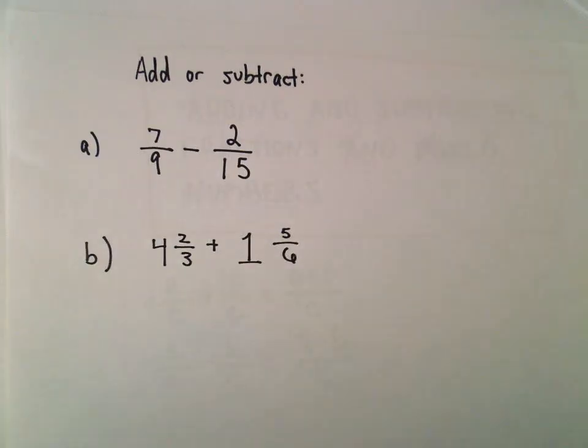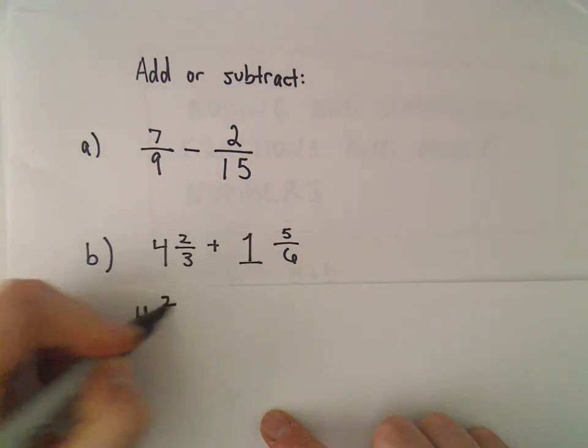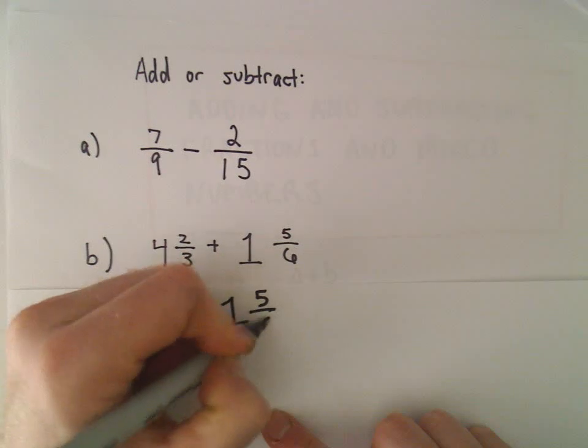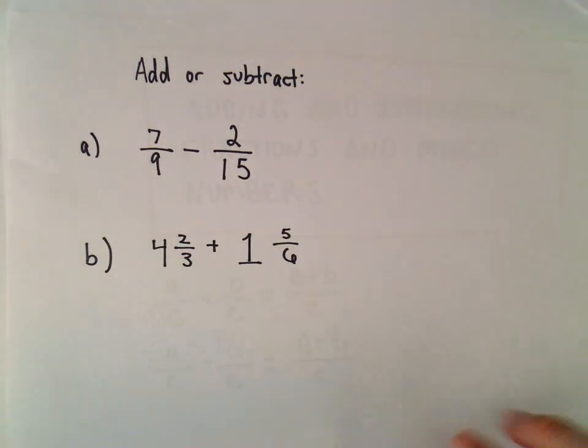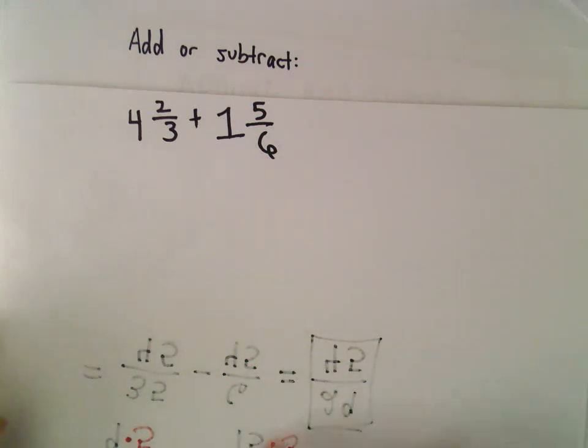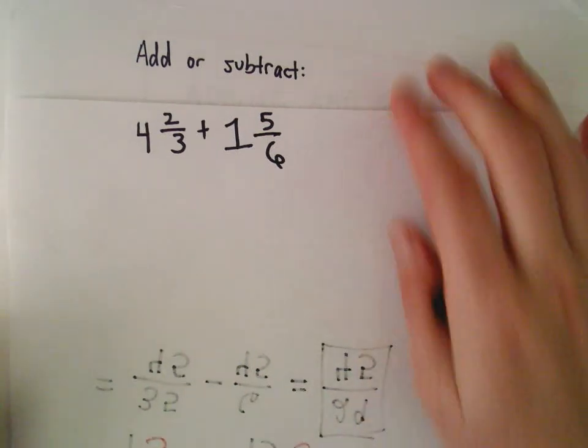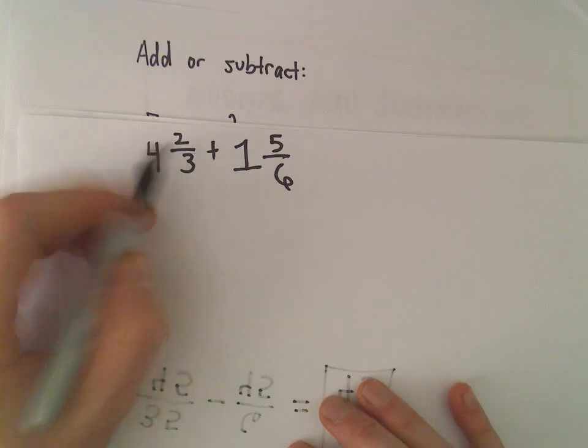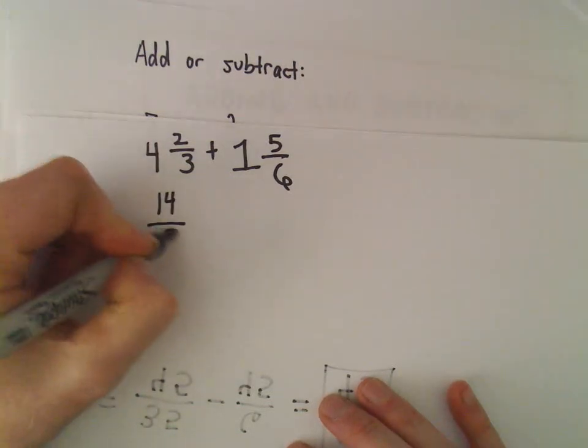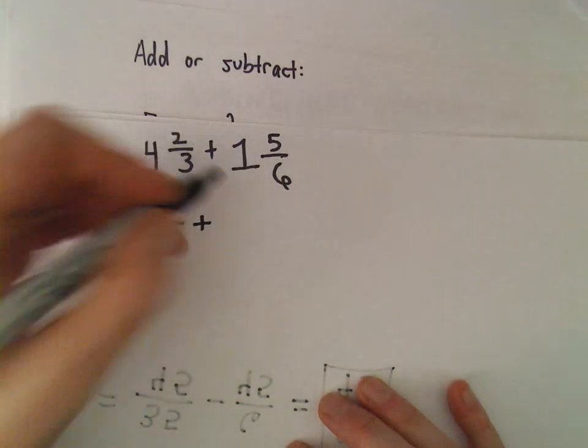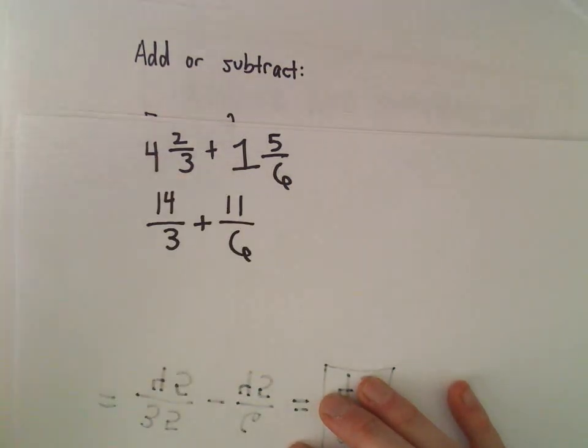One more example here. We've got 4 and 2 thirds plus 1 and 5 over 6. Now, I'm going to do the same thing I said I was going to, which is, in general, I just write these as single fractions from the get-go. So 4 times 3 is 12 plus 2, we can write that as 14 thirds. 6 times 1 is 6 plus 5 is 11 over 6.